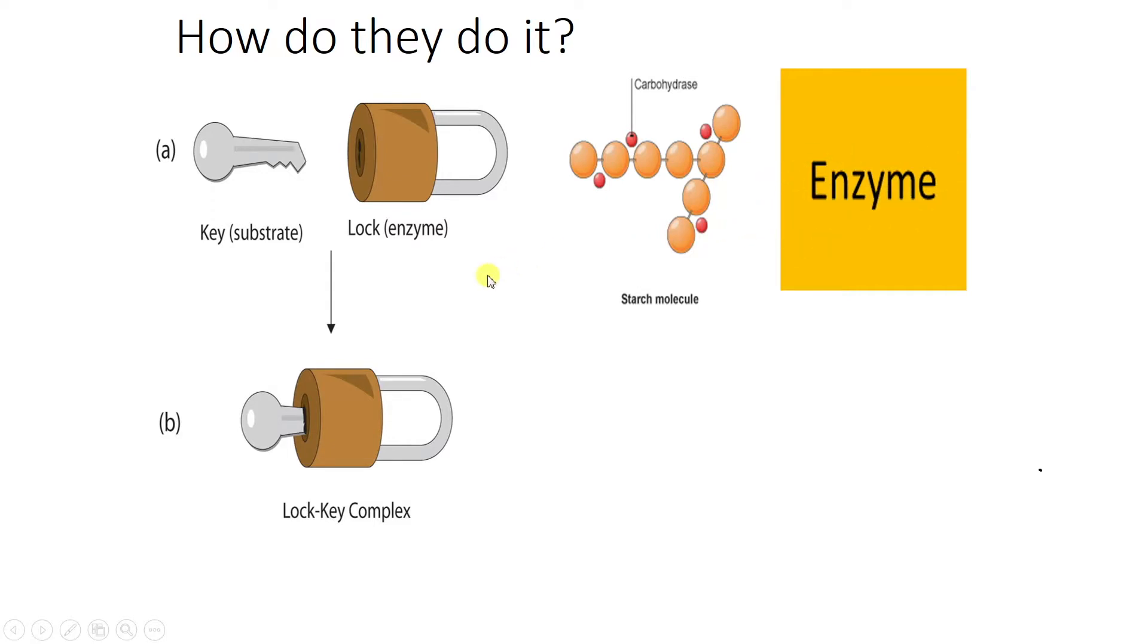Enzymes essentially work on a lock and key basis. This is the model that we use to describe how enzymes work. So the idea is that the lock itself, the padlock, is like the enzyme. And then we have whatever it's going to be using, whatever it's going to be reacting with. We call that the substrate or the key in the model.